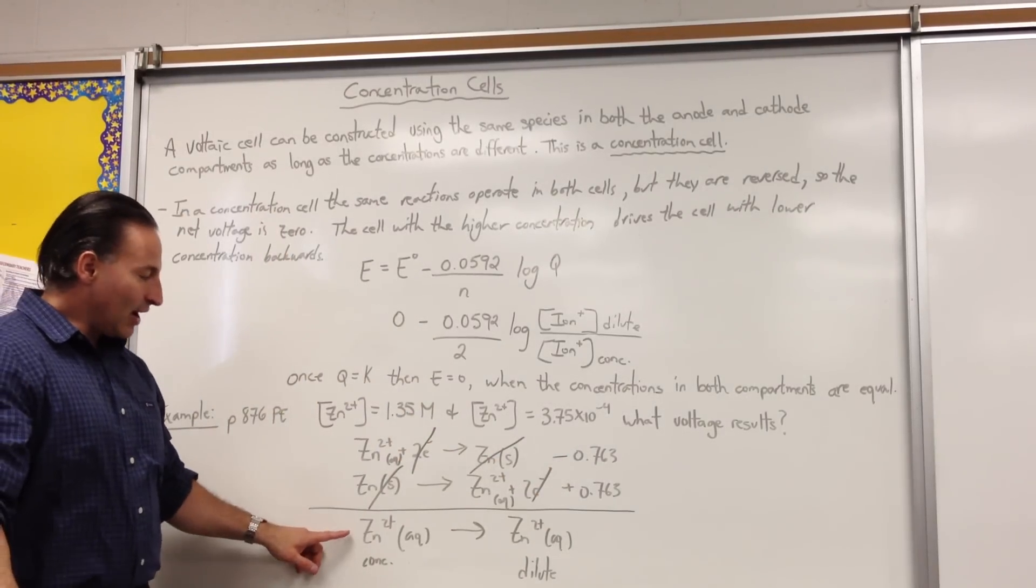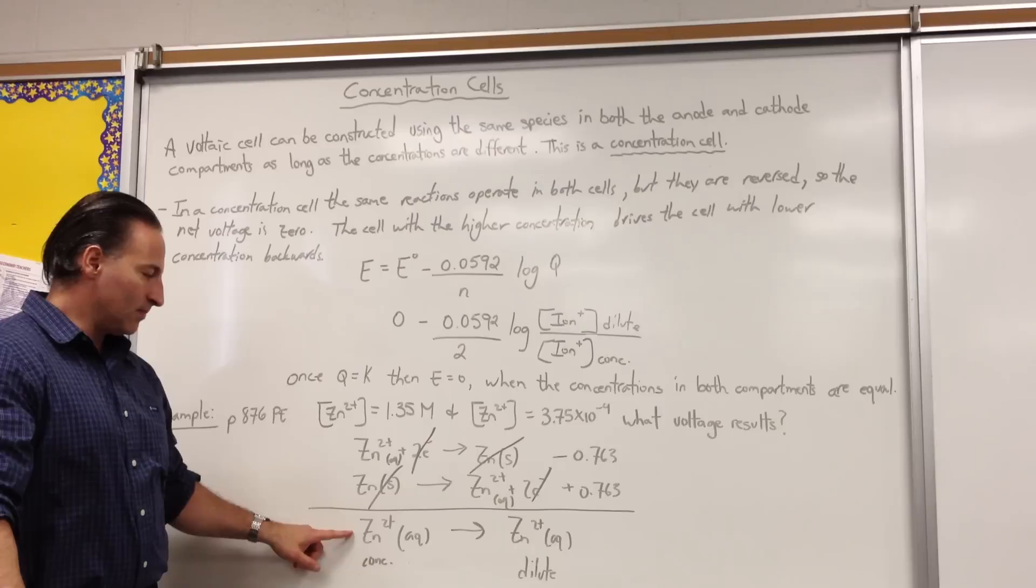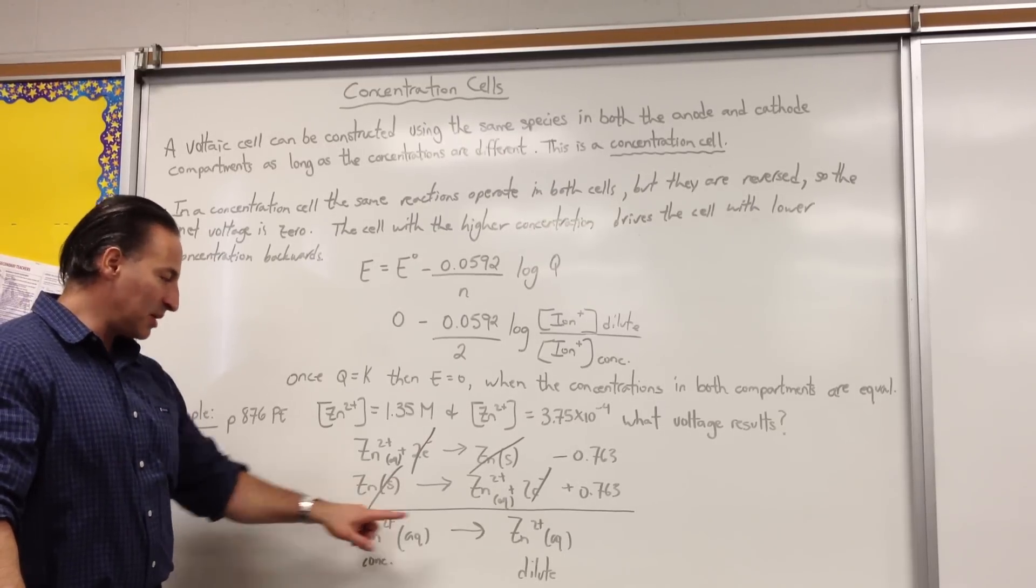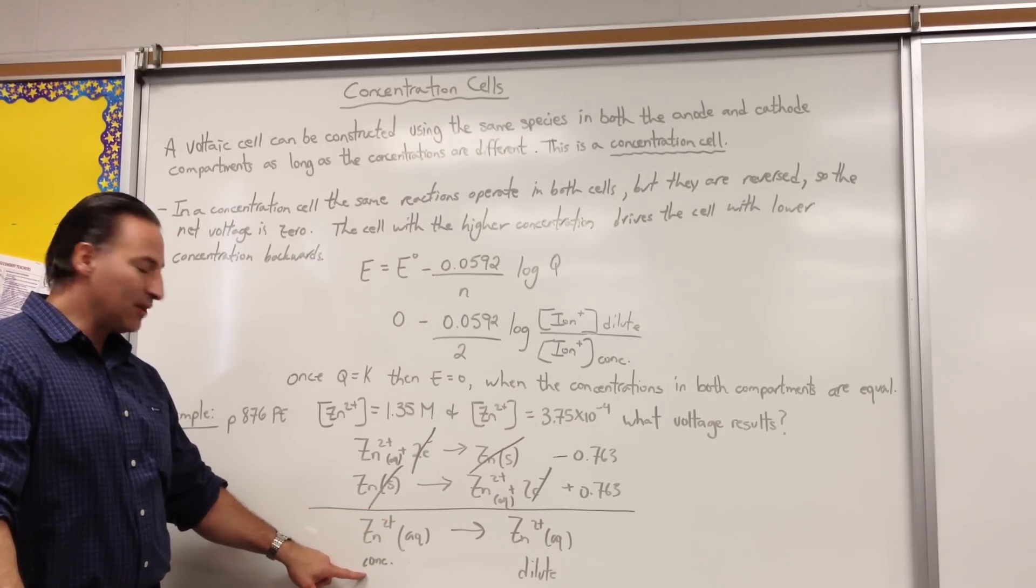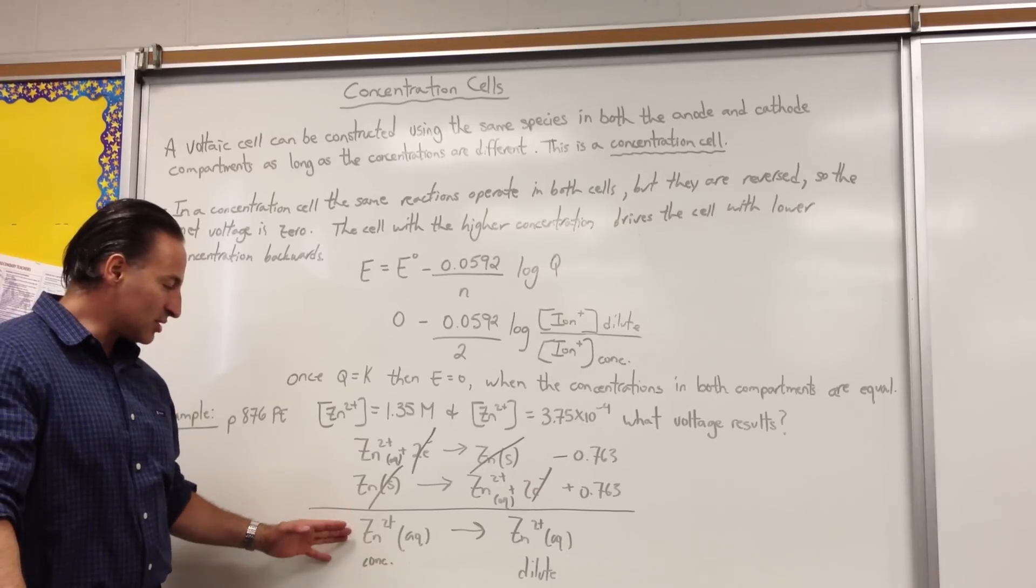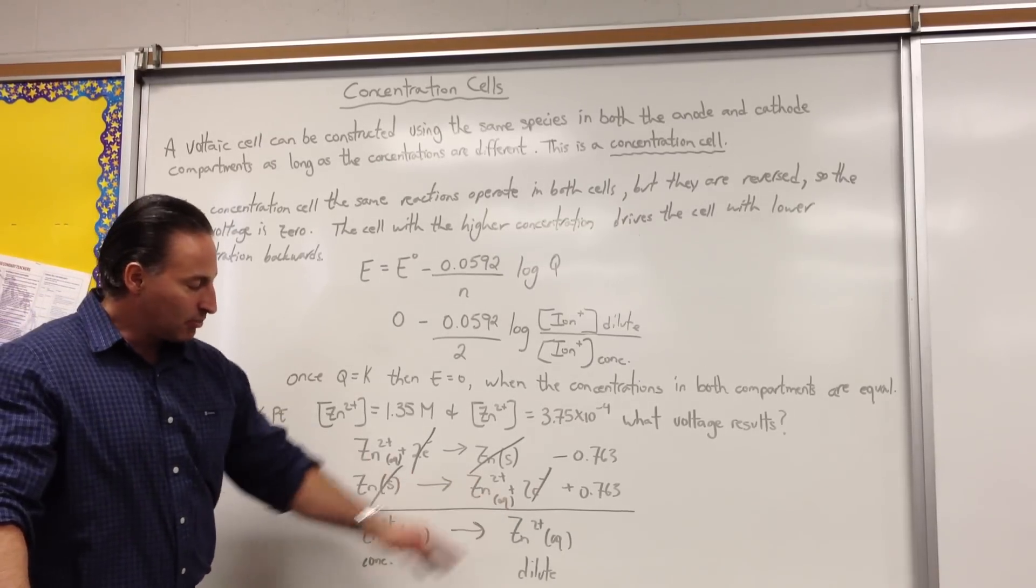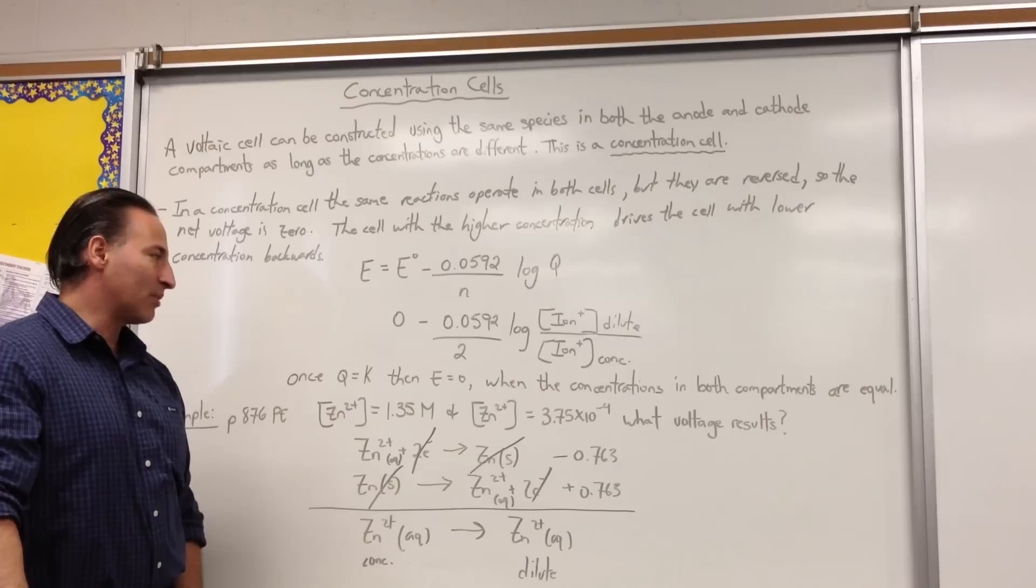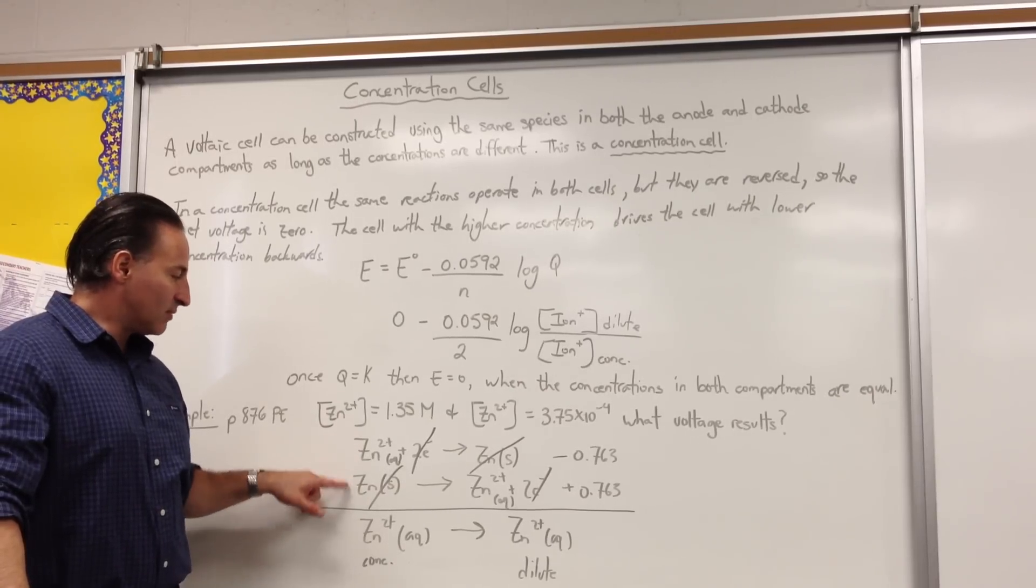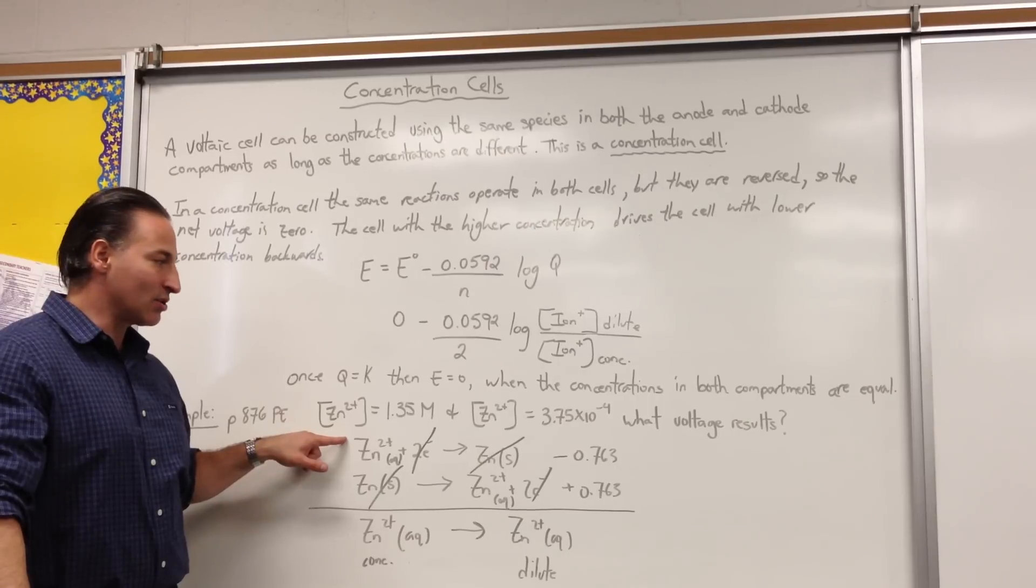But you'll see that the net reaction is not the same species—it's the same species, but different concentrations. So you get from a concentrated cell pushing the dilute cell backwards, and that's how you discern which one of the reactions goes backwards.